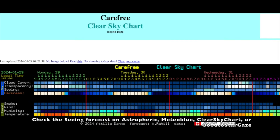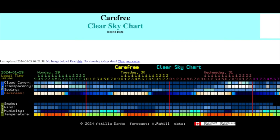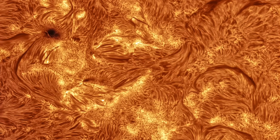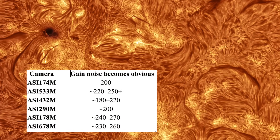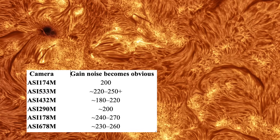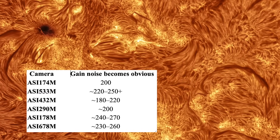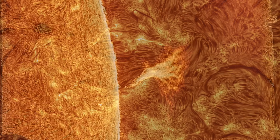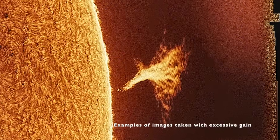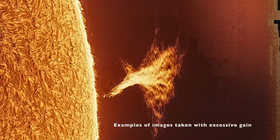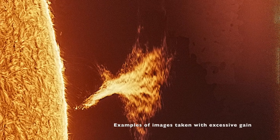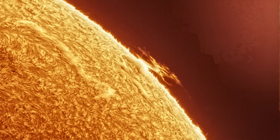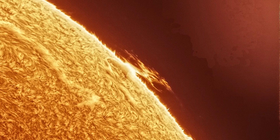Mono solar cameras will produce noticeable noise if you push the gain too high. Here's a rough idea of where gain will start to cause material image problems for many of today's popular solar cameras. If you have to push to this level of gain to get a good histogram, it's better to extend the exposure time above 10 milliseconds instead. I don't recommend going beyond these levels — 90% of these values or less is recommended.